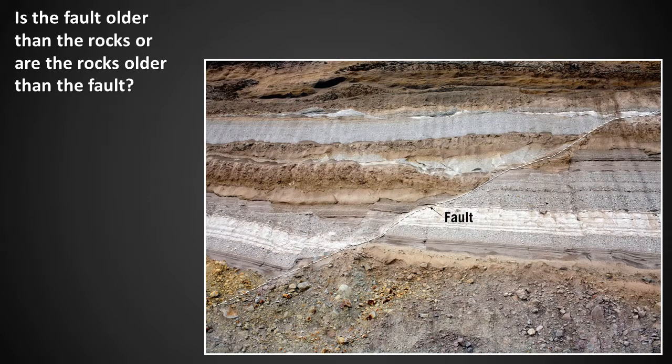Here we see some sedimentary rocks that have been cross-cut by an earthquake fault. Is the fault older than the rocks, or are the rocks older than the fault? That's right — the rocks are older than the fault since they needed to exist before the fault could offset them. This is an example of cross-cutting relations.